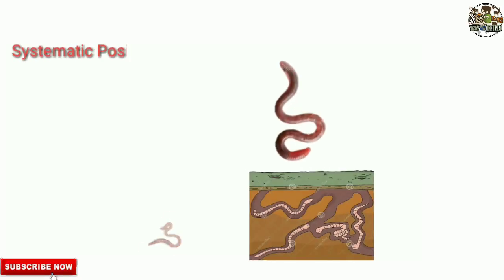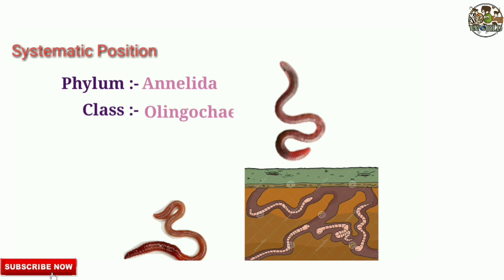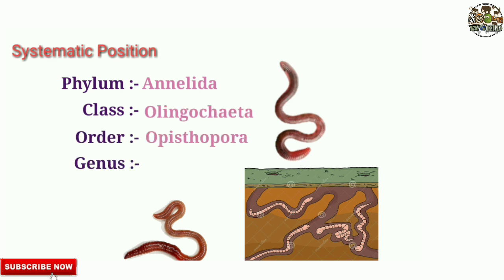Systematic position: Phylum - Annelida, Class - Oligochaeta, Order - Opistopora, Genus - Pheretima, Type - Pheretima posthuma.